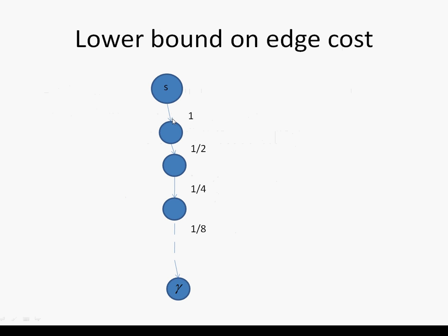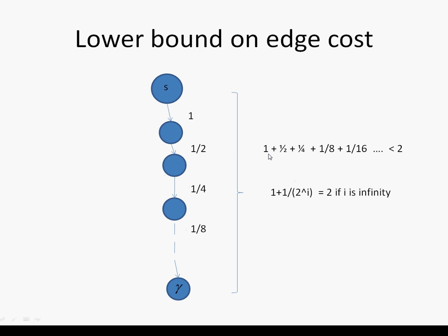For example, let's say the first edge costs 1, the second edge costs 1/2, the third edge costs 1/4, the fourth edge costs 1/8, and so on. That means no matter how far we go, there will always be an edge that is half the cost of the earlier edge. This is an infinite series — the overall cost will always be less than 2, and it will only equal 2 if we go infinitely far. This series is 1 plus the sum of 1 divided by 2^i, and the whole series equals 2 only if i is infinite.